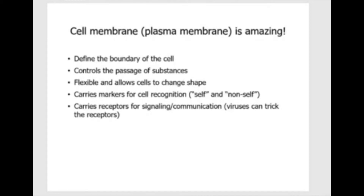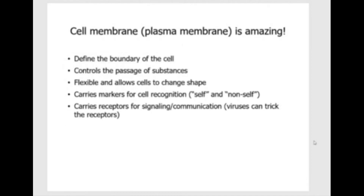The cell membrane performs many functions. I'm just going to give you a quick overview, and then we're going to focus on the specifics. First of all, the cell membrane will regulate what goes into the cell and what comes out of the cell. That's very important because you want nutrients like glucose to go into the cell because it provides fuel, and you want waste molecules to come out. For pathogens like bacteria and viruses, you want to keep them out of the cell so they cannot infect it. All those things are achieved by the cell membrane.